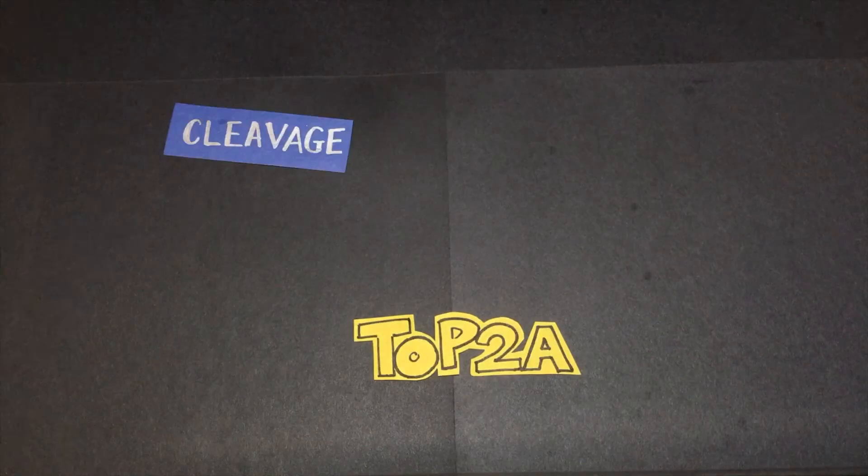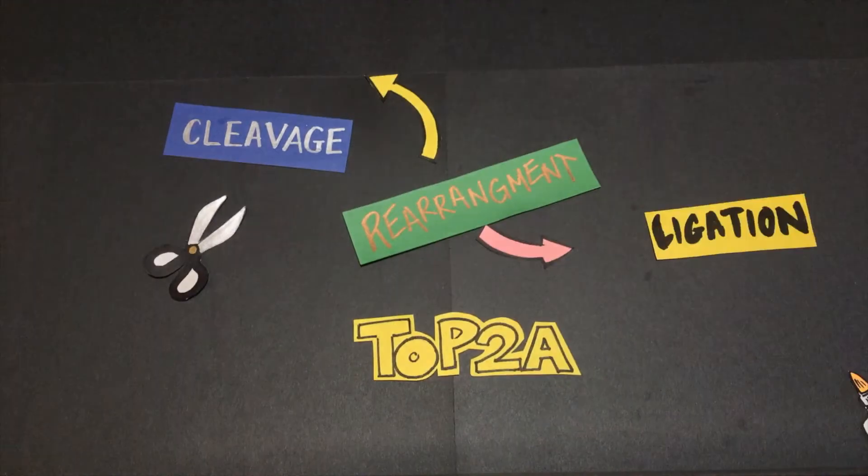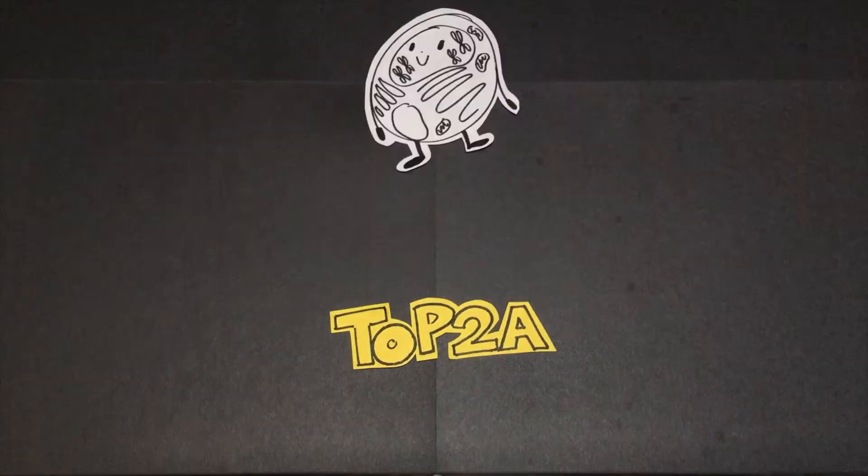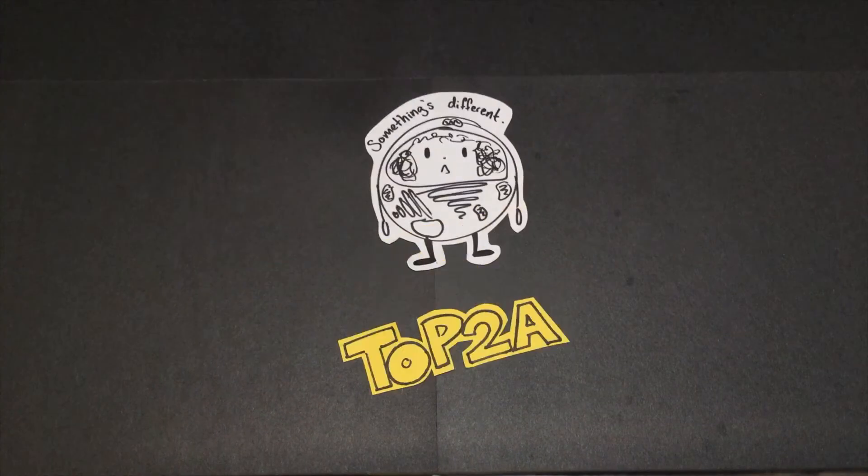Well, Top 2a is responsible for the selective cleaving, rearranging, and religating of DNA strands, which helps untangle the chromosome, thereby changing the state of DNA in the cell.